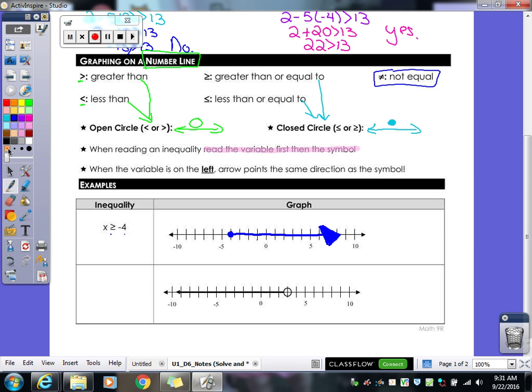So our second example there, they gave us the inequality graph. They want us to write what the inequality is. So I'm going to start with x. I see an open circle, so that tells me it's not going to have the or equal to. My shading is to the left, so that tells me that it's going to be a less than. So I do x is less than. And then what number is my circle on? 3. So x is less than 3. Shading is pretty easy on the number line.